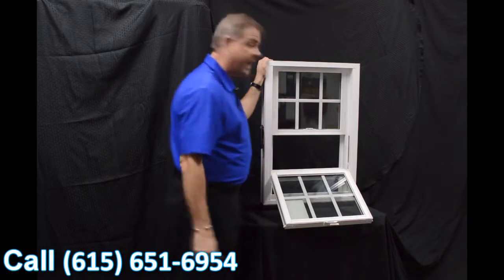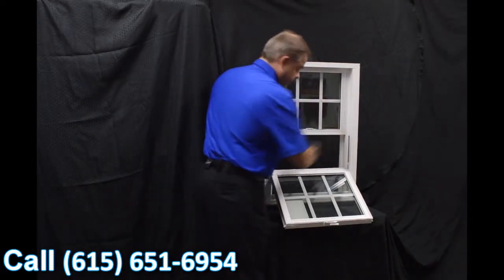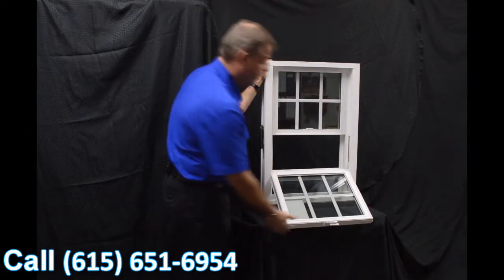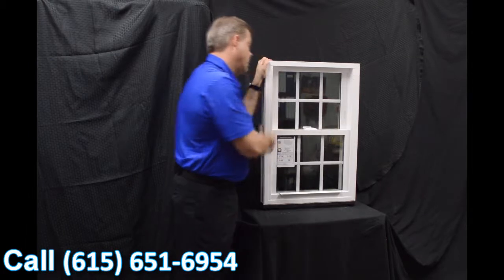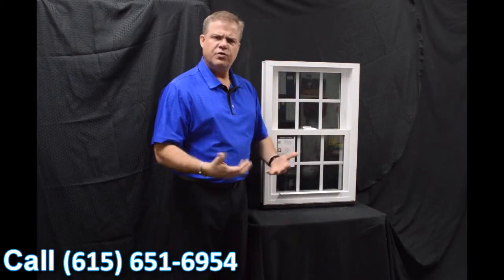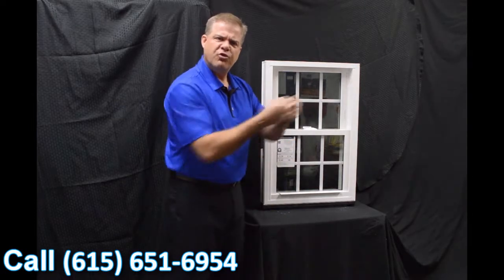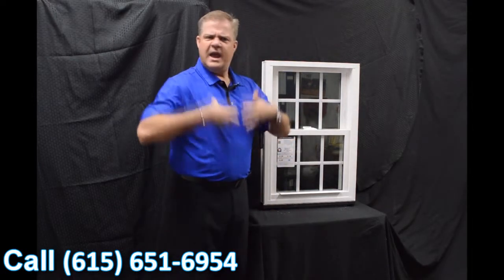When we re-engage that top sash, one of the next features of the window is this interlock—this full-length interlock. So when we lock the window, this delta lock that we have, which is zinc cast, extremely strong, extremely durable—it draws that other sash in, combining that with the interlock, and it gives it an extremely airtight window.